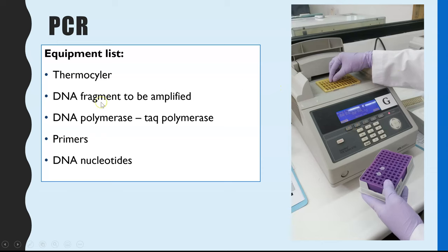You also need the DNA fragment which you want to clone. You need the enzyme DNA polymerase so that you can make new polymer chains of DNA. And we actually use what's called TAC polymerase, which is a particular type of DNA polymerase.